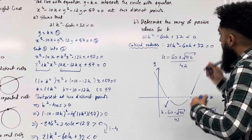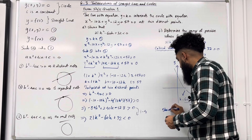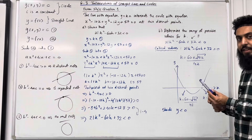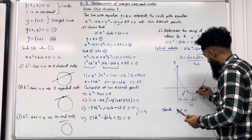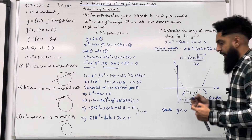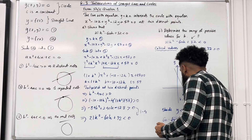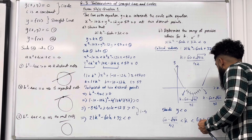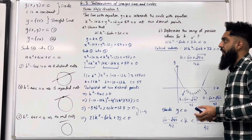The left intercept is k equals (60 minus square root 912) over 42, and the right intercept is k equals (60 plus square root 912) over 42, which is larger. Since we need y less than 0, we shade the region between the two roots. The range of possible values for k is: (60 minus square root 912) over 42 is less than k, which is less than (60 plus square root 912) over 42. That completes part B.